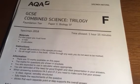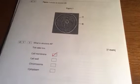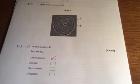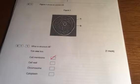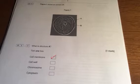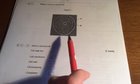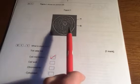Combined Science Trilogy Foundation. Figure 1 shows an animal cell. What is structure A? Structure A, this one on the outside, is the cell membrane. Structure B is the nucleus.